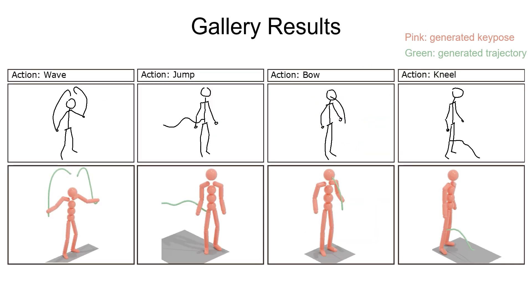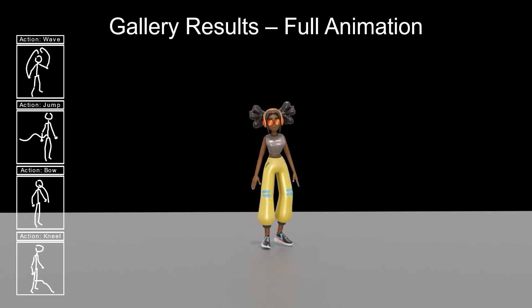Here are more storyboard translation examples. For instance, this storyboard contains 4 frames, from wave to kneel. Our resulting animation clips are shown here. This is the composed full animation.